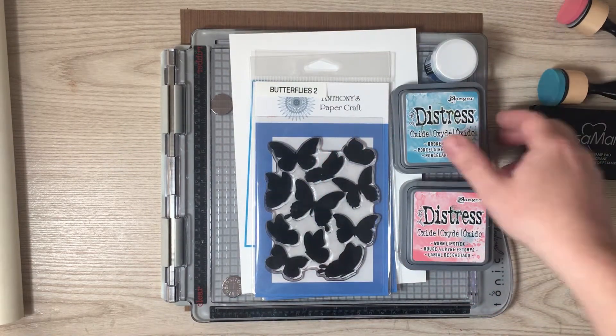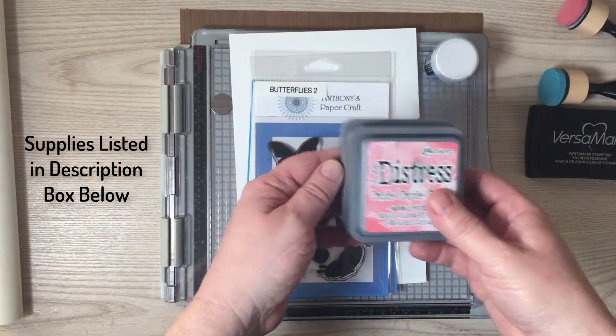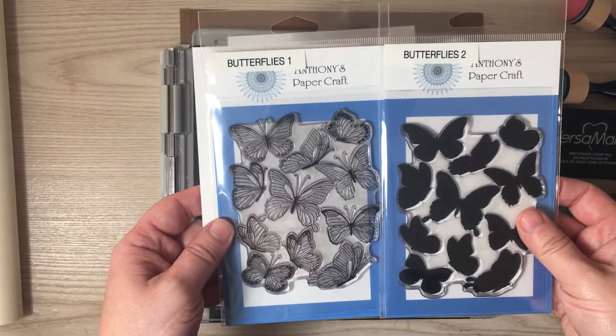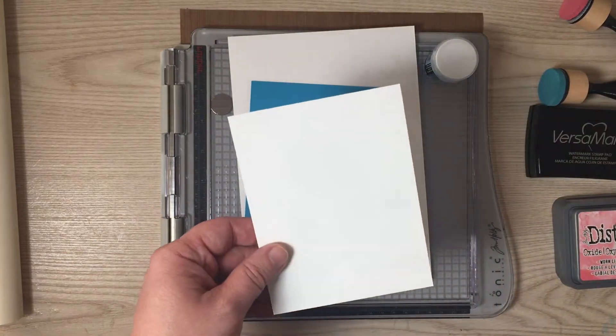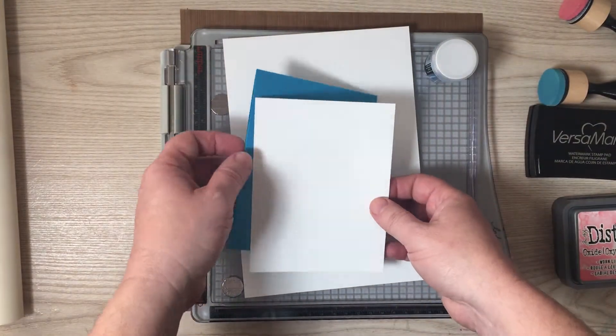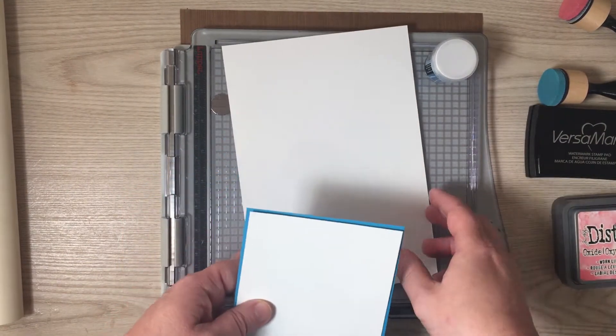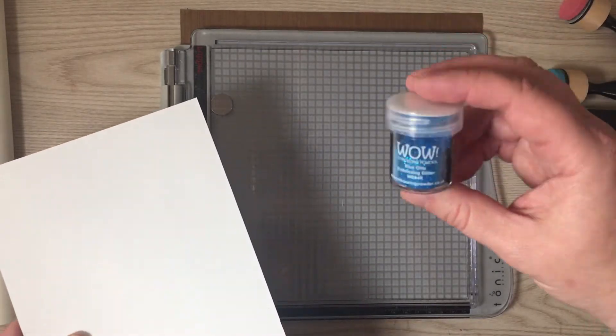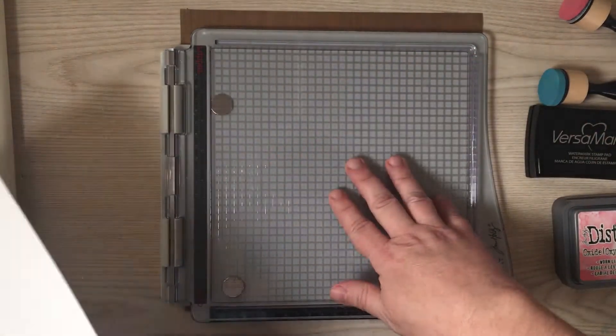So here are the tools we're going to use. We're going to use some Versamark and some blending tools as well as Distress Ink Oxide in Broken China and Worn Lipstick. I'm going to use the Anthony's Papercraft Butterflies in Butterflies 1 and 2. I do have a piece of cardstock that I'm going to use some oxides on later and I have a card base and I have my Strathmore White Paper that I am going to be using for the butterflies.